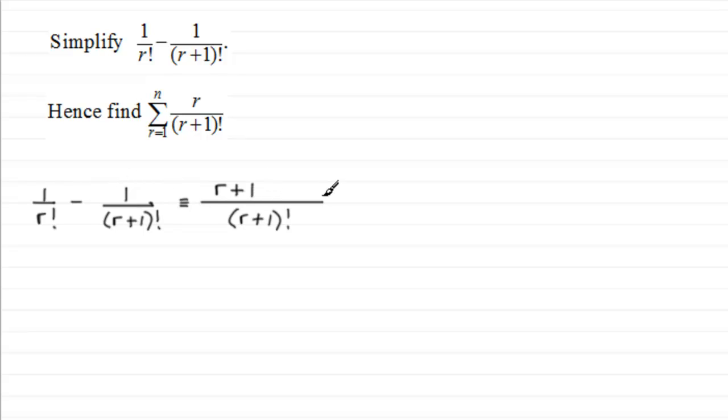And then for this second term here it's just going to be minus 1. And simplifying this gives us that this is identical to r on the top, then all over (r+1) factorial. Okay, so we've simplified then our expression up here.